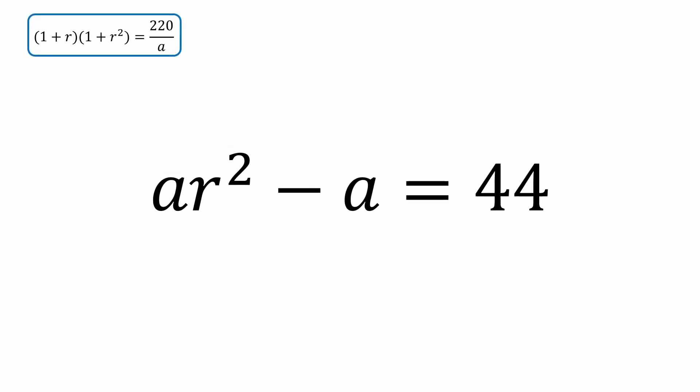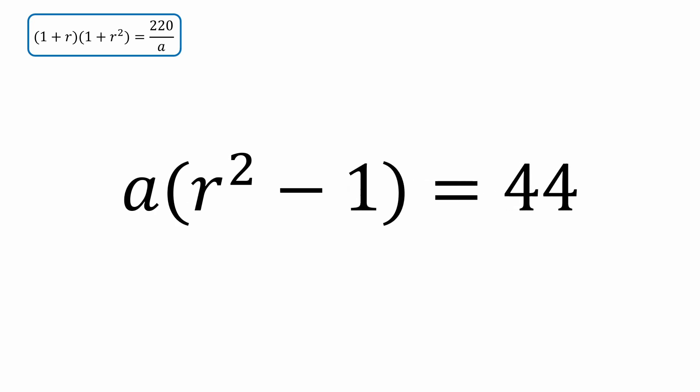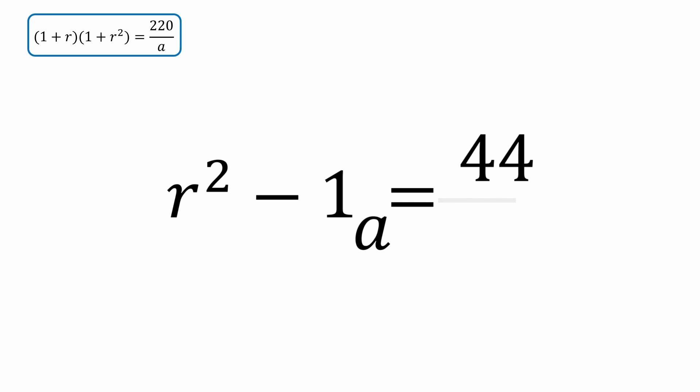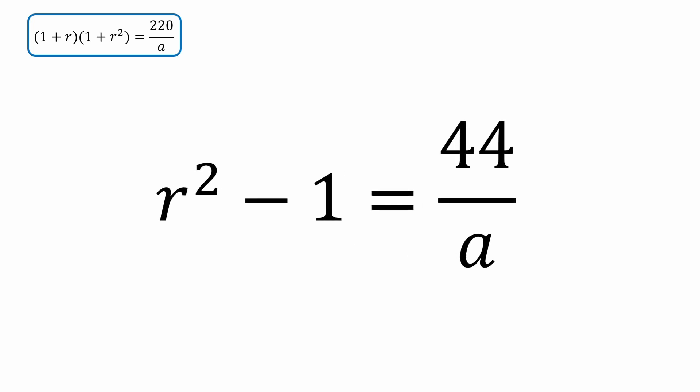And do some factoring with the equation equal to 44 now. Just like before, I'll first factor out an a, then divide both sides by a. r squared minus 1 is a difference of two squares, so we'll rewrite it as r plus 1 times r minus 1.